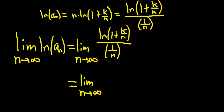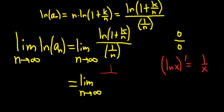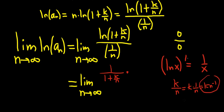The derivative of ln x is 1 over x. So here the derivative of the numerator is 1 over (1 plus k over n) — that's your 1 over x — times the derivative of the inside. We think of k over n as k times n to the negative 1, so when you take its derivative you get negative k times n to the negative 2, which is negative k over n squared.